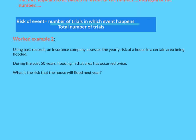Using past records, an insurance company assesses the yearly risk of a house in a certain area being flooded. Obviously it's going to depend where it is and what it's near, but this particular house in this area during the past 50 years (total number of trials), flooding in that area has occurred twice (number of trials in which that event happens). So over 50 years it happens twice, so the probability of it flooding, you might think, also known as the risk in this case.